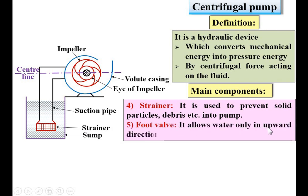Next: foot valve. It allows water only in the upward direction, so sometimes it is called a non-return valve, and it is located very near to the strainer. This is the foot valve and it opens in the upward direction only — it allows water only in the upward direction. When the pump is in non-working condition it regains its closed position.